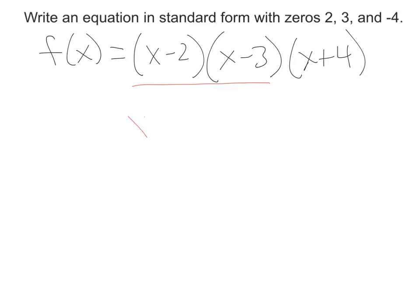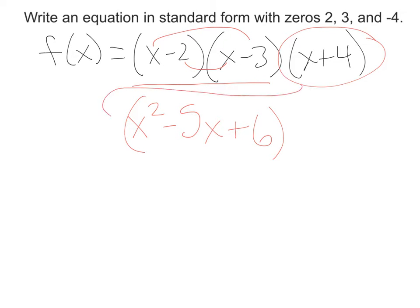FOILing gives us x squared, then minus 3x minus 2x gives me minus 5x, and then plus 6. Now I'll take that x plus 4 and write it out in front.